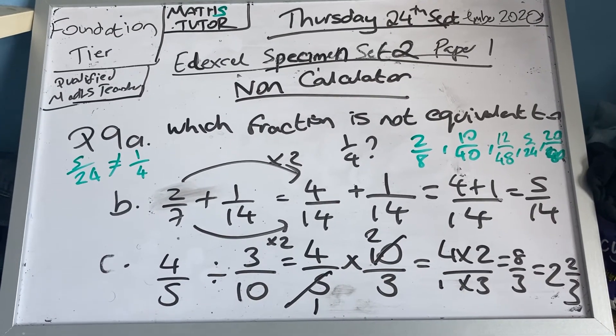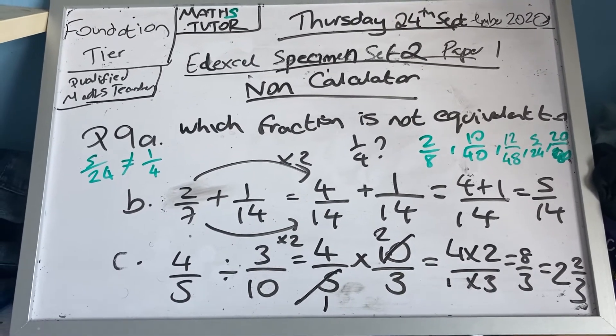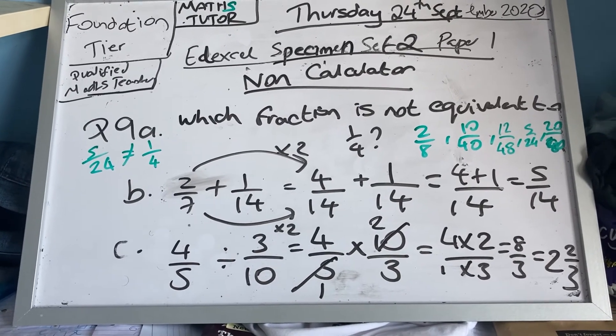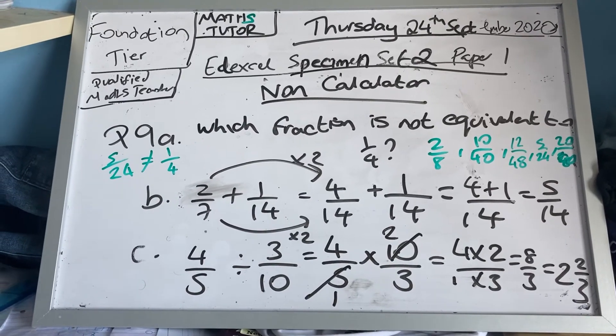So dividing fractions is the KFC method: keep, flip, change. Four-fifths times ten-thirds. Now I cancel down the fifth and the tenth.